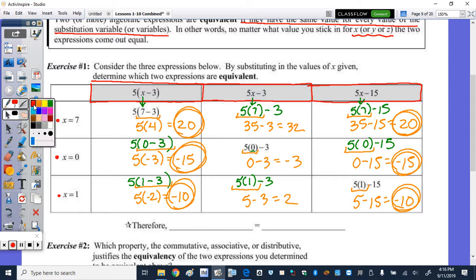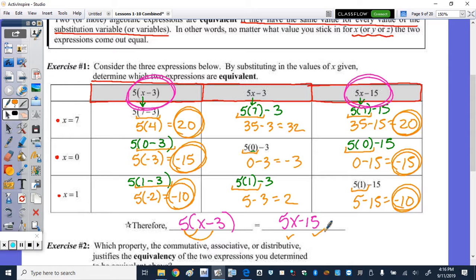So therefore, we can say that this expression right here, the 5 times x minus 3, is equal to this expression here of 5x minus 15. And we should know that because in the notes from last class, if we distribute 5 times x is 5x, and 5 times negative 3 is negative 15.